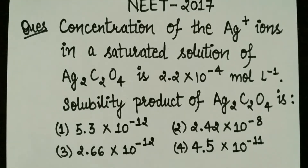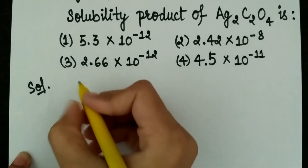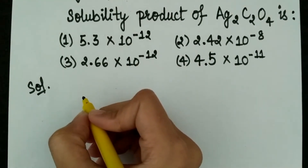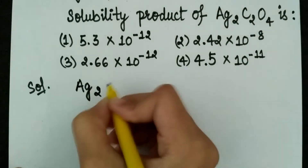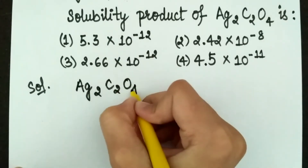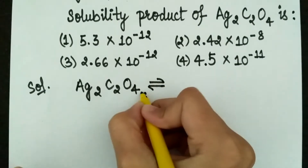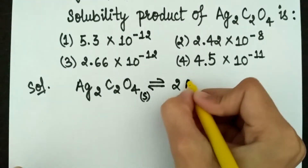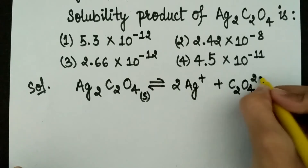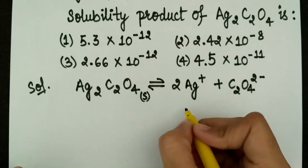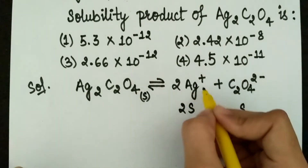We have 4 options. First, see that Ag2C2O4 breaks up into its ions. Ag2C2O4 (solid) dissociates into 2 Ag+ plus C2O4²⁻. Here we can write 2S for the concentration of Ag+ ions and S for C2O4²⁻, because we have 2 ions of Ag+ for every one oxalate ion.